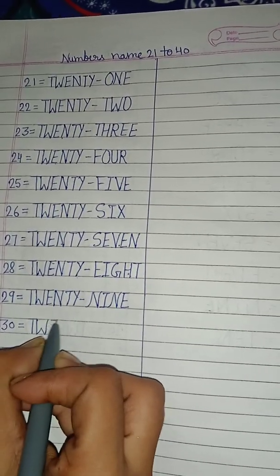35 — T H I R T Y, 30; F I V E, 5. 35. 36 — T H I R T Y, 30; S I X, 6. 36.